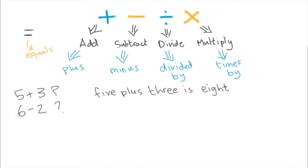What is six minus two? Six minus two is four.